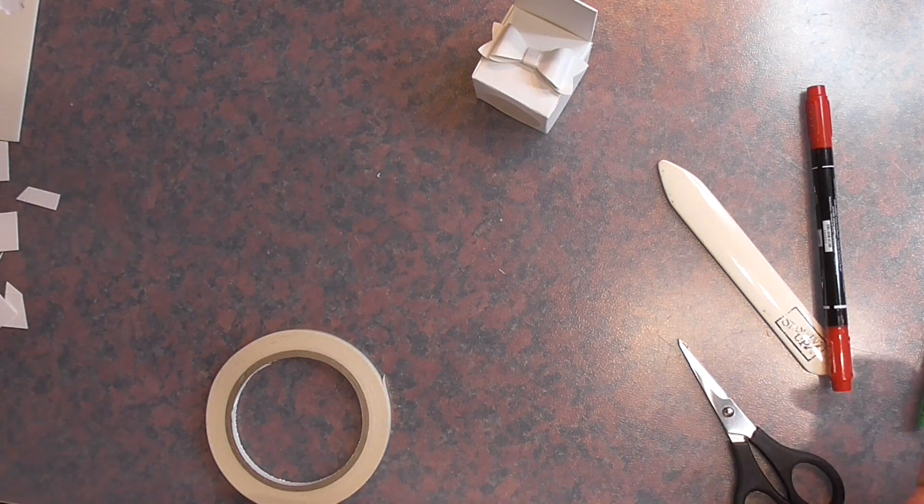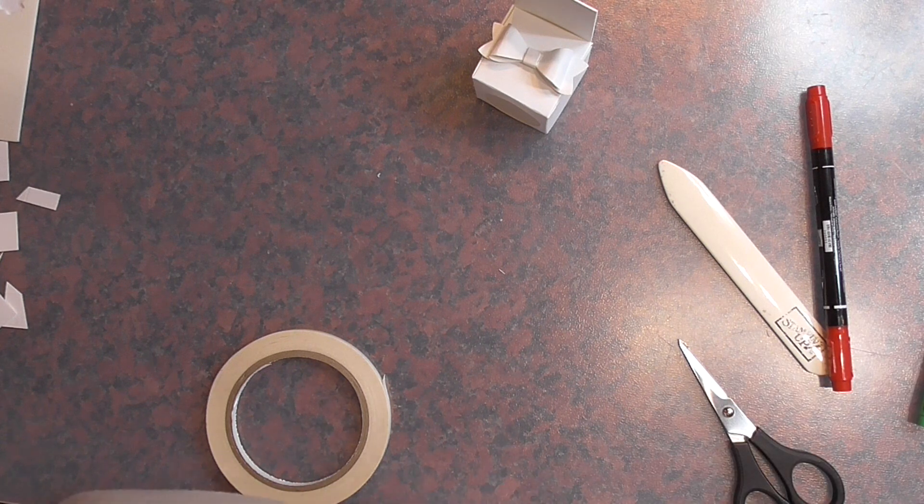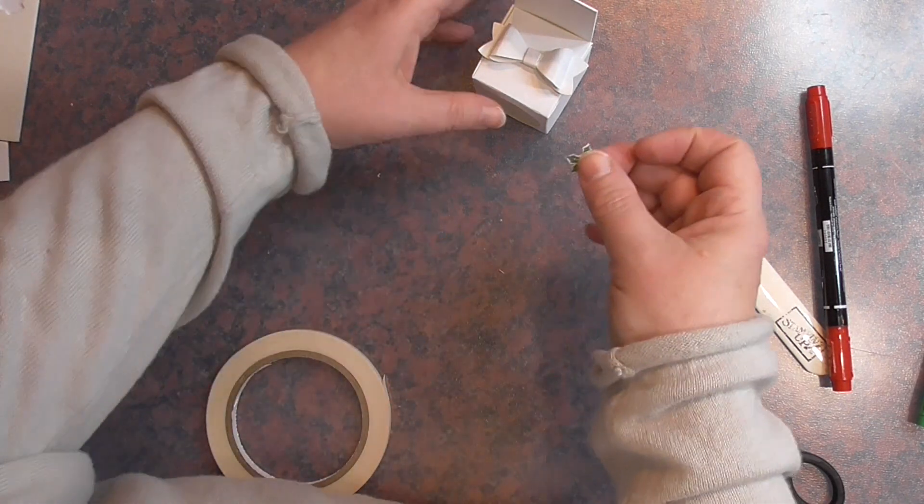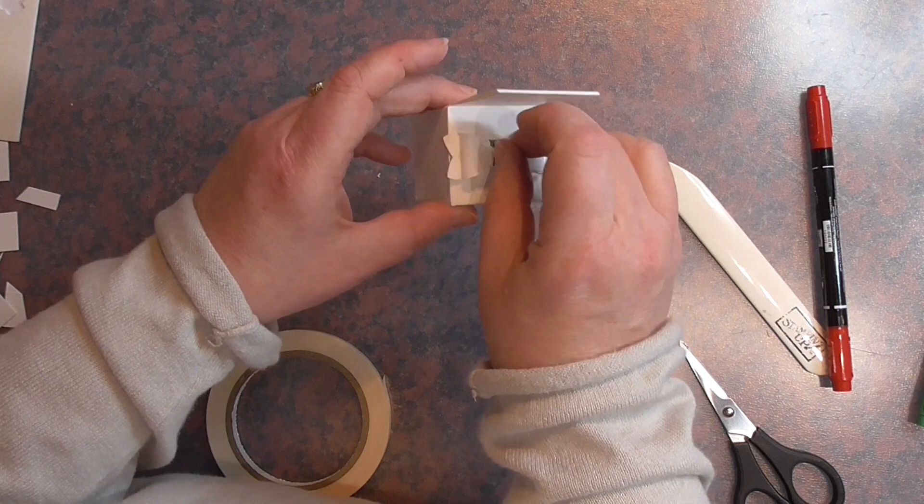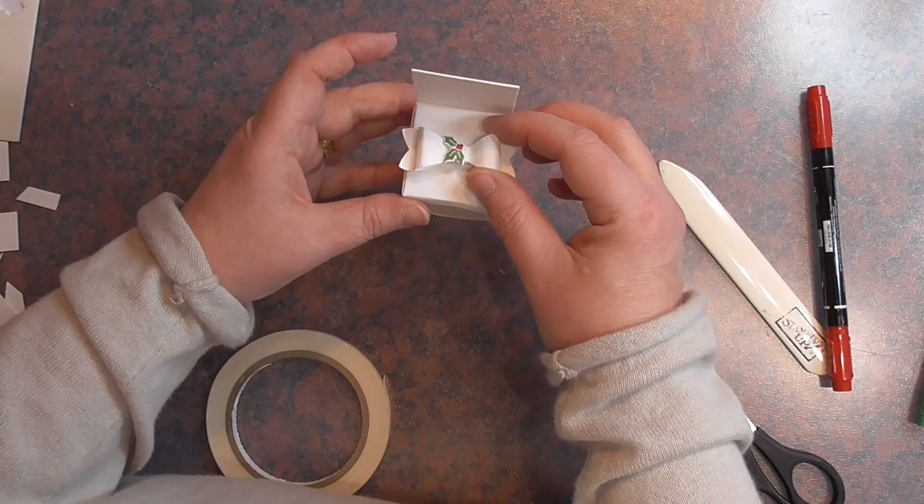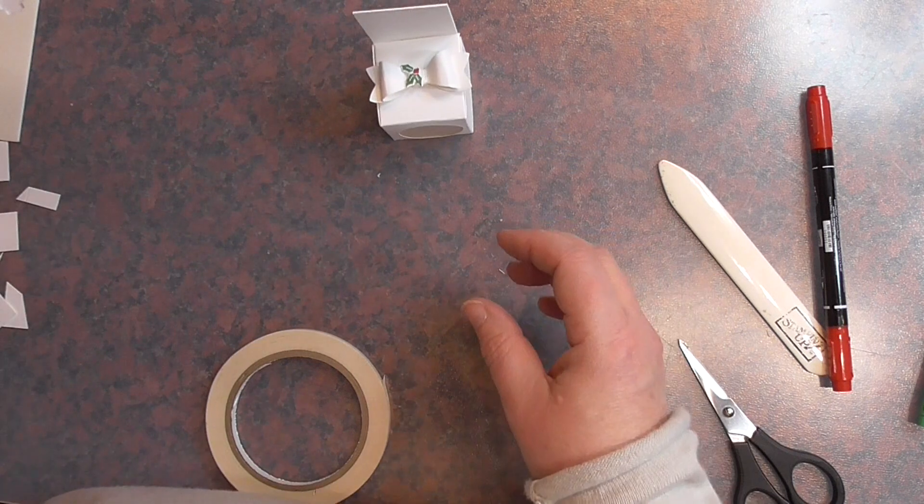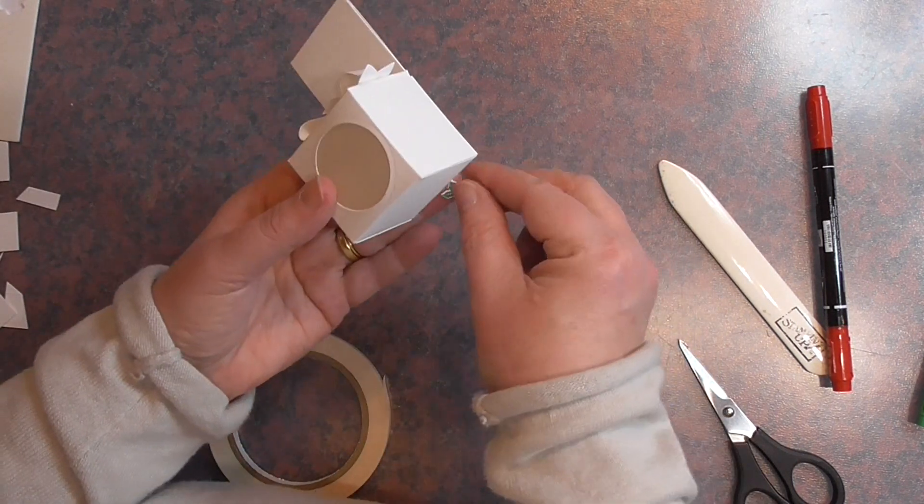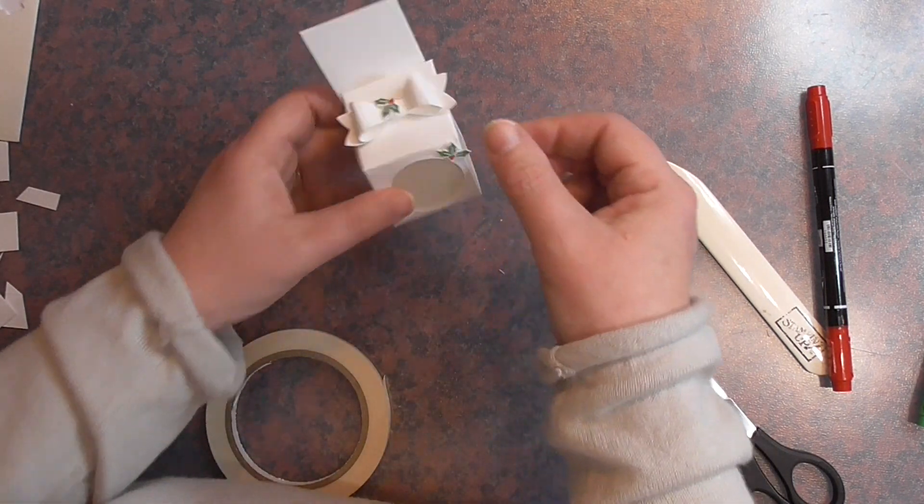Okay. Then as I said, I cut them out with a die. So I've got some that I prepared earlier in good Blue Peter fashion. You can pop one on the bow. And one on each corner.